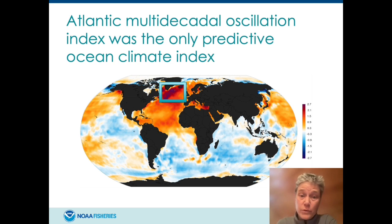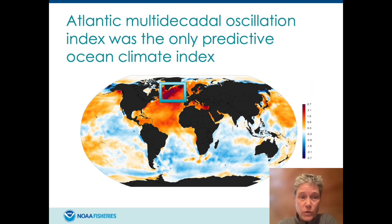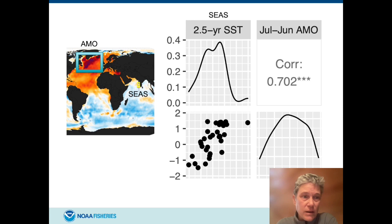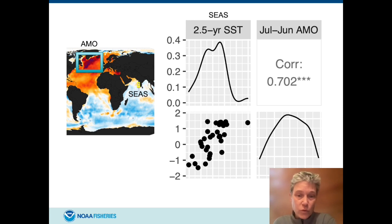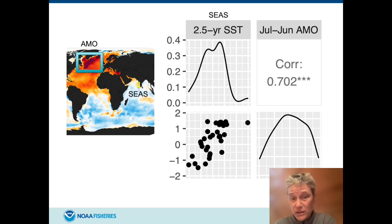The last covariate that improved forecast was the Atlantic Multidecadal Oscillation Index — the only ocean climate index that improved the forecast. This index is associated with sea surface temperature anomalies in the North Atlantic. It may seem odd that this North Atlantic index would be associated with improved forecast, but recent research shows it is correlated with conditions in the Indian Ocean. You can also see that the AMO is highly correlated with the 2.5-year sea surface temperature, so it's not surprising that both improved forecast.